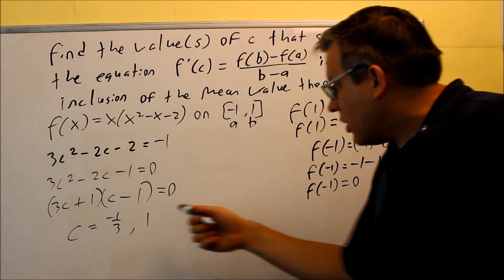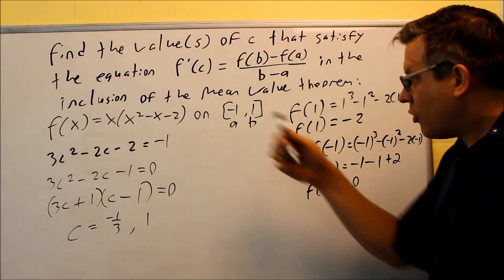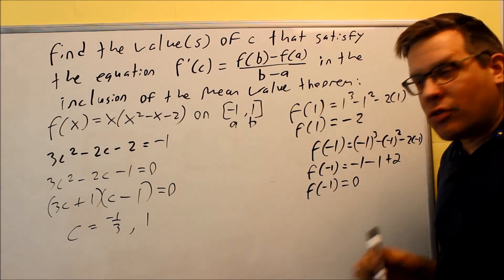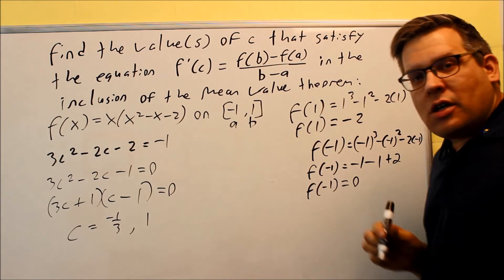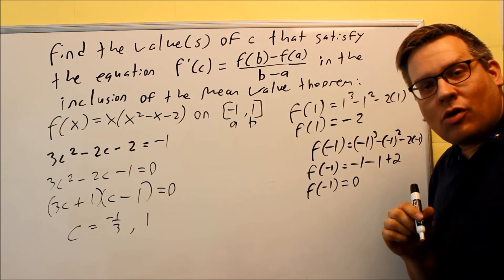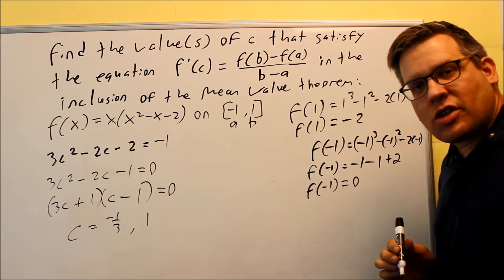And both of these are included on my original interval, my closed interval, from A to B. So that means that that satisfies the mean value theorem because those two are included. So now that we've done these, what we're going to do next is I'm going to show you a graph because I always want to make sure you know physically what's happening when we do something like this. So that's what we'll do next. Let's take a look at the graph.